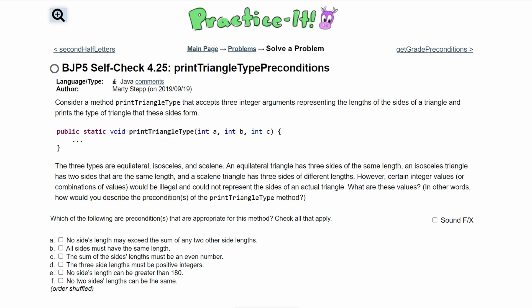For practices self-check 4.25, printTriangleTypePreconditions. We are asked to consider a method printTriangleType that accepts three integer arguments representing the lengths of the sides of a triangle and prints the type of triangle that these sides form.